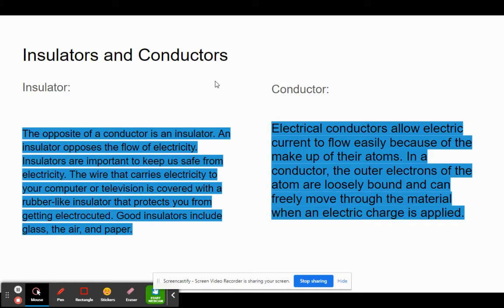Good insulators can include glass, the air, and potentially paper. A conductor, an electrical conductor, allows electric current to flow easily because of the makeup of their atoms. In a conductor, the outer electrons of the atom are loosely bound and can freely move through the material when electric charge is applied.